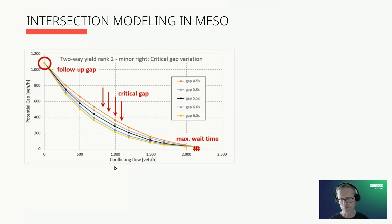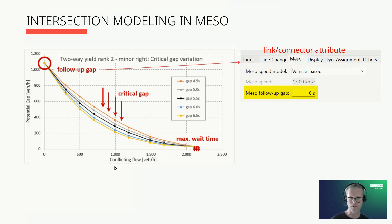There are a few attributes that determine the conflicts at intersections. First, meso follow-up gap—it determines the maximum capacity of a subordinate flow within a node as long as there is no traffic on a road that leads to a conflict. Please note that the follow-up gap only becomes effective if it's greater than the temporal distance between two successive vehicles that has been defined in the car following model. It is a link attribute.